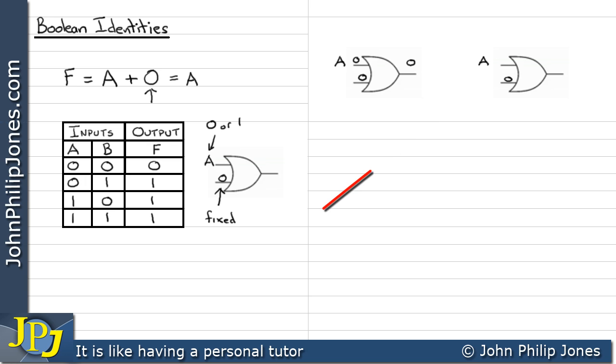The other possible combination is over here when A is 1. Now it's a two-input OR gate and we should know that when there's at least one 1 present to an OR gate, the output is 1.